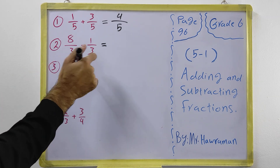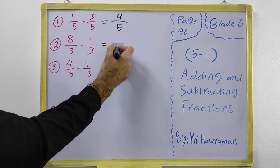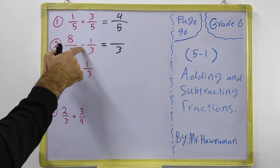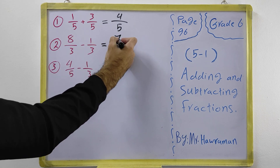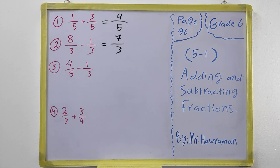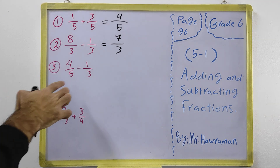In this example the denominators are the same, so we don't need to do anything — the denominator stays the same. We just subtract the numerators: 8 minus 1 equals 7.